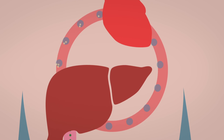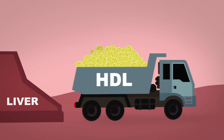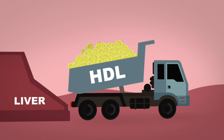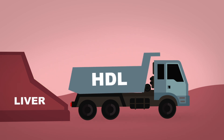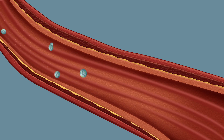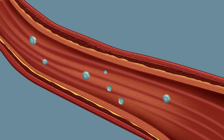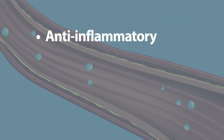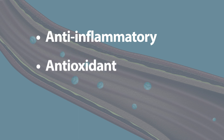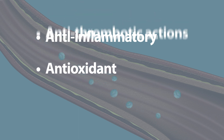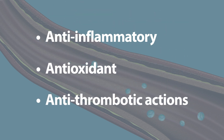Think of HDL particles like tiny garbage trucks, picking up excess cholesterol and bringing it to the liver, where it can leave the body through bile. HDL protects the arteries of the cardiovascular system through anti-inflammatory, antioxidant, and anti-thrombotic actions.